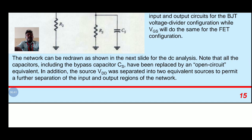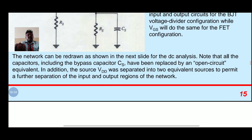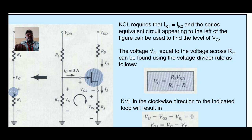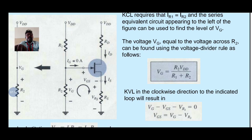The network can be redrawn for DC analysis, with all capacitors including bypass capacitors replaced by open circuit equivalents. The source VDD is separated into two equivalent sources to permit separation of input and output regions. Applying Kirchhoff's current law, IR1 equal to IR2, and the series equivalent circuit to the left is used to find VG. The voltage VG equal to R2 into VDD divided by R1 plus R2 can be found using the voltage divider rule.